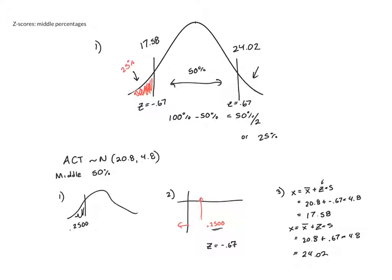Knowing it on the middle 50% though, that only gave me the lower end. To find the upper end, I said well it's symmetric, so if this z-score is -0.67, the other z-score must be +0.67.